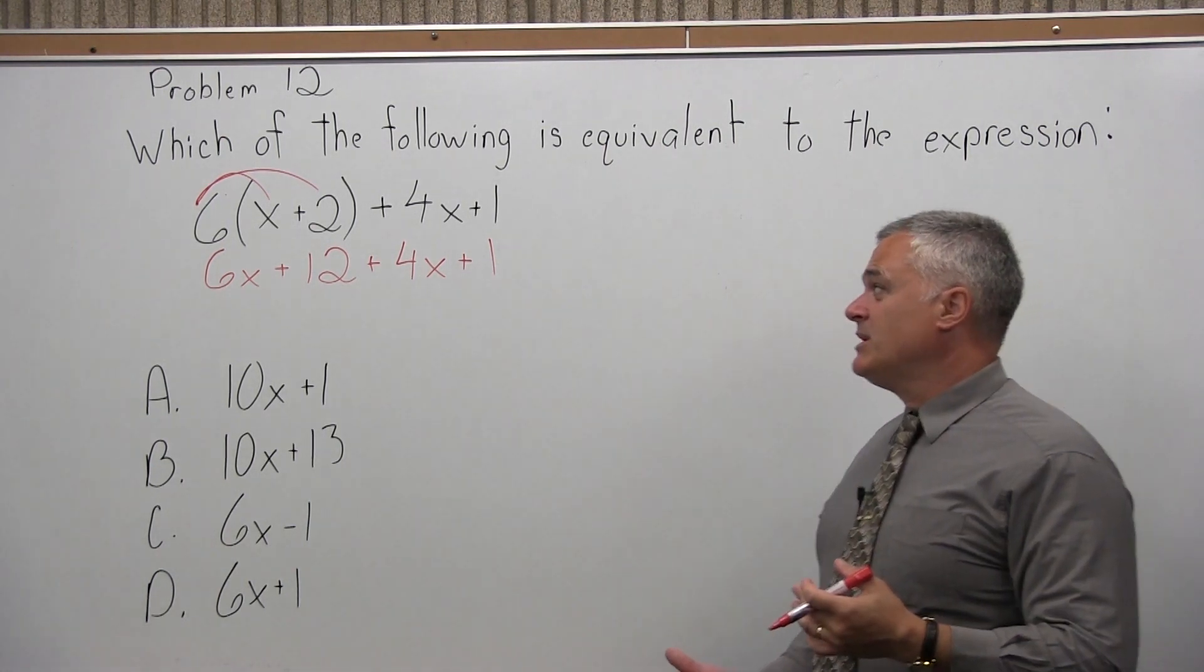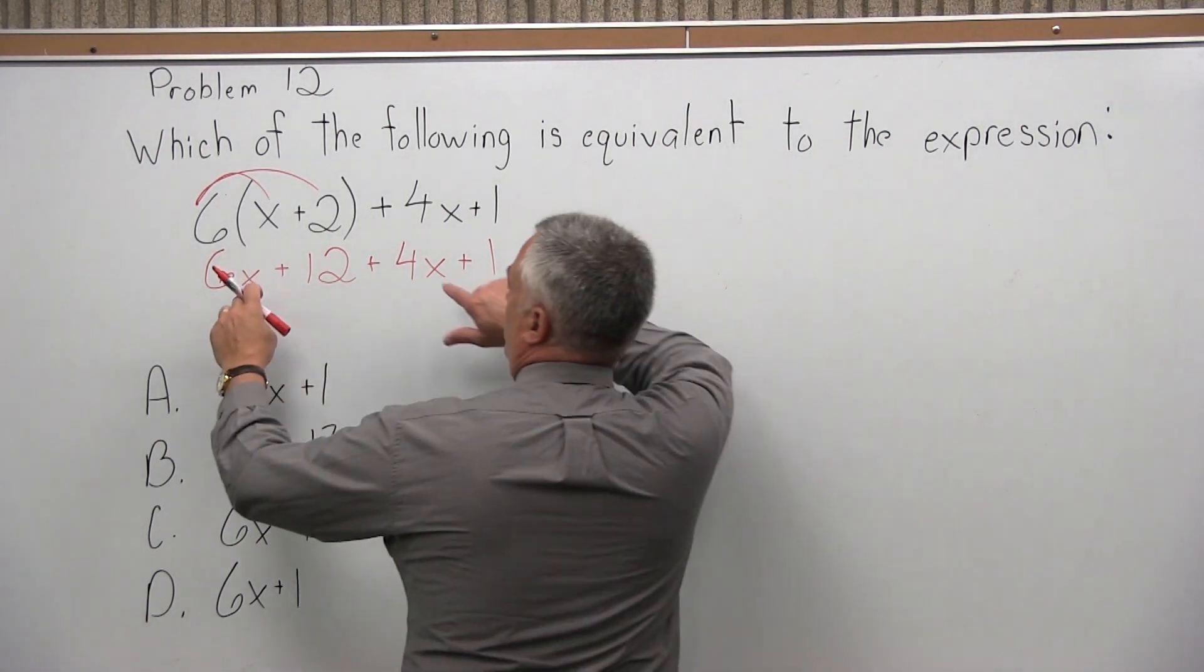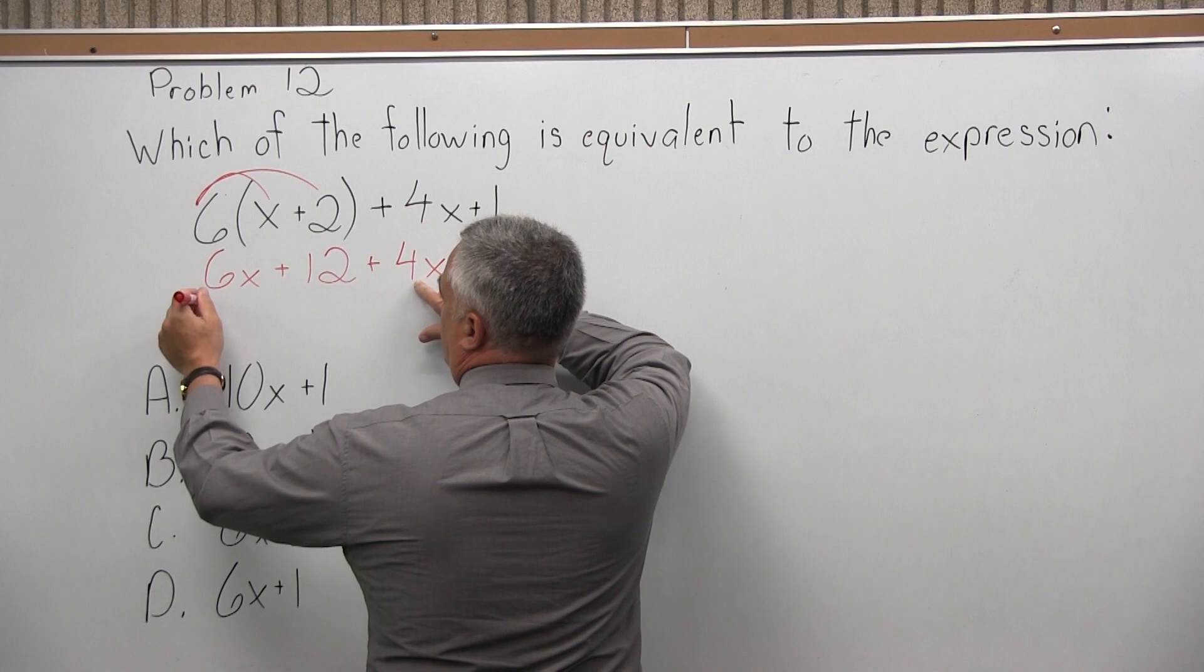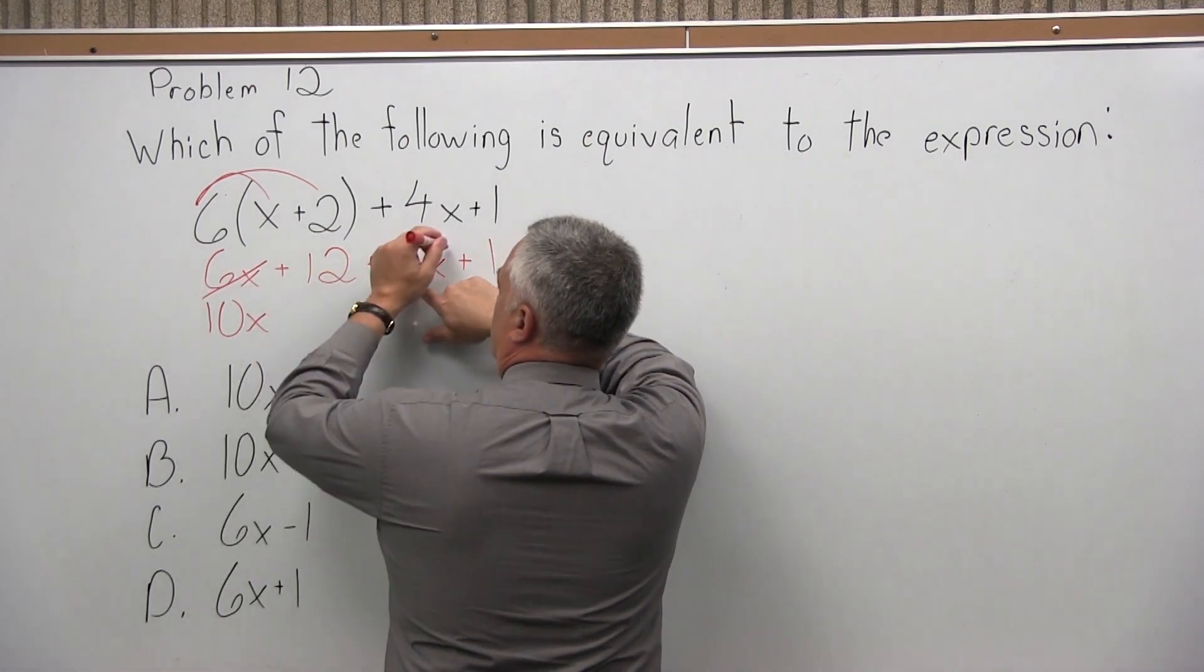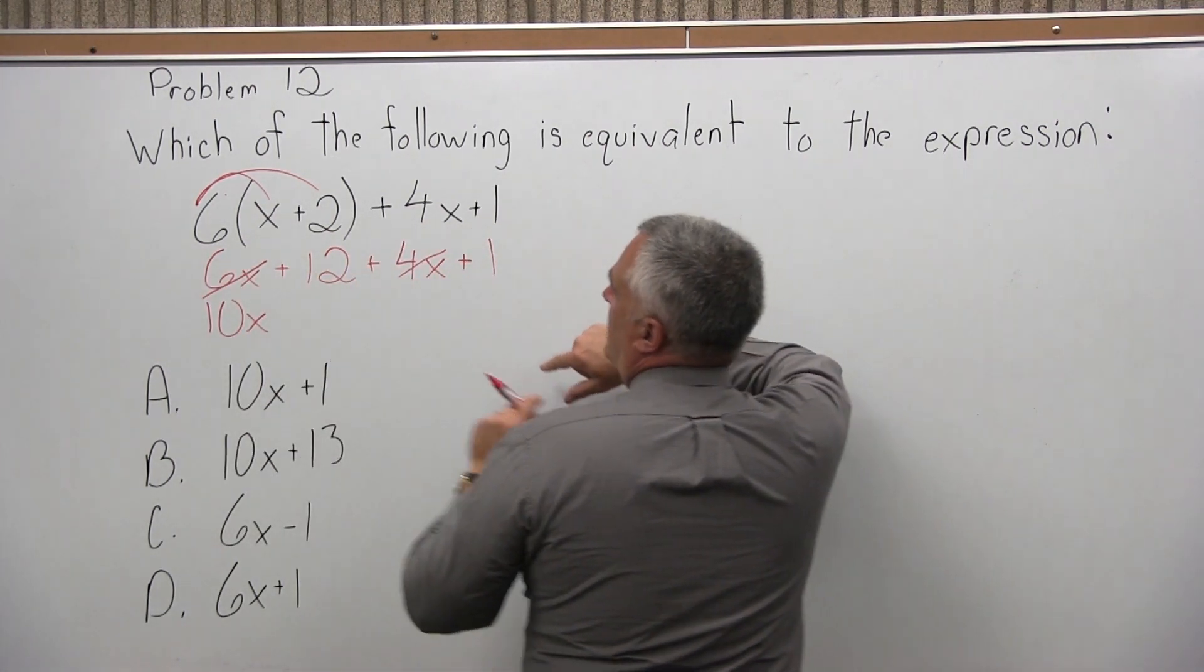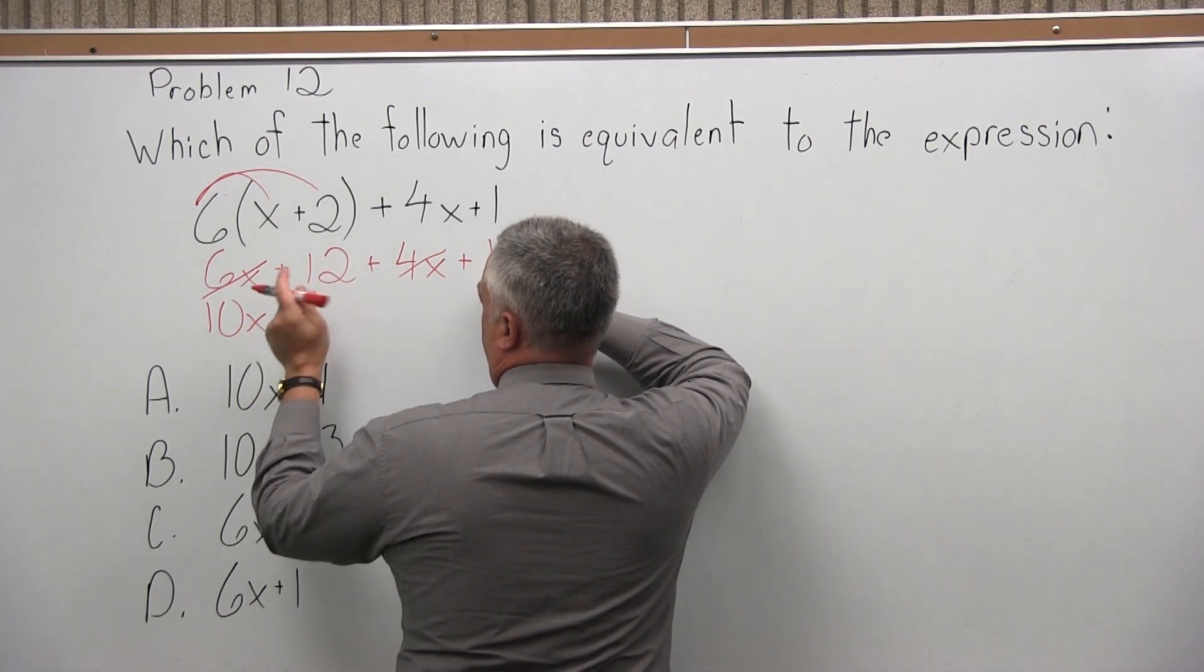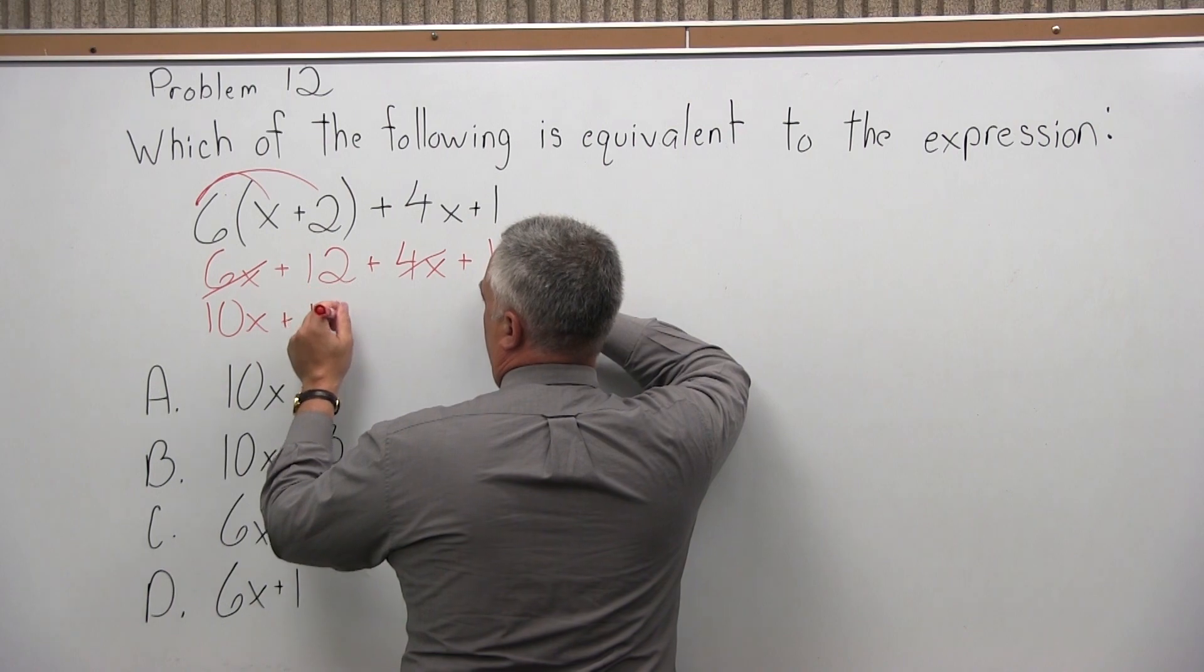Now the x's can be combined. 6x and 4x both have an x, so they can be put together. 6x plus 4x will be 10x, so that takes care of the 6x and the 4x. And what's left is 12 and 1, both positive, so we put them together and we get 13.